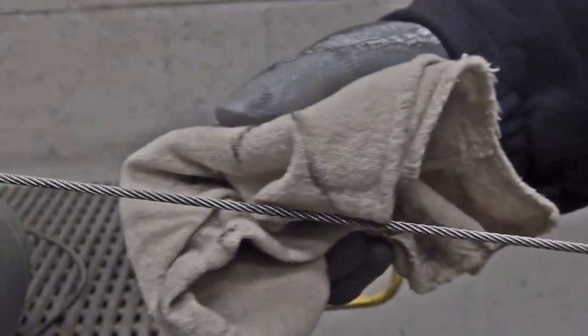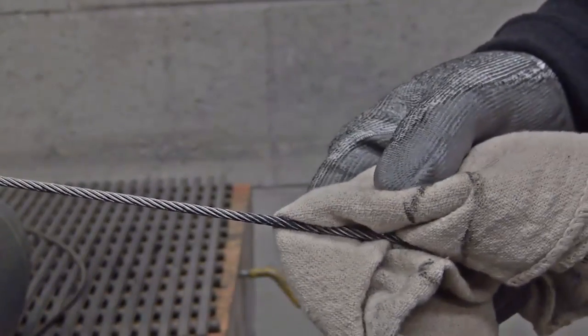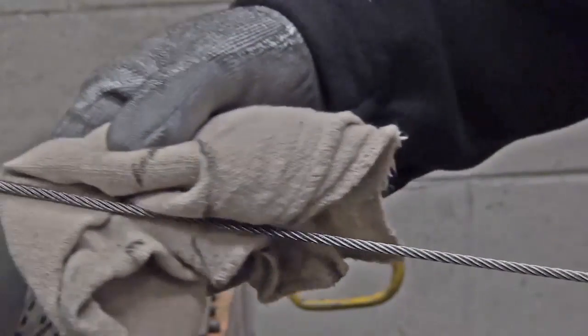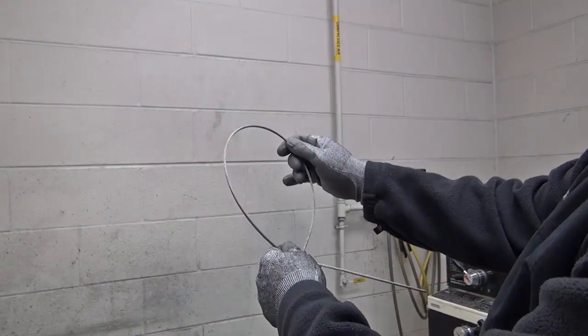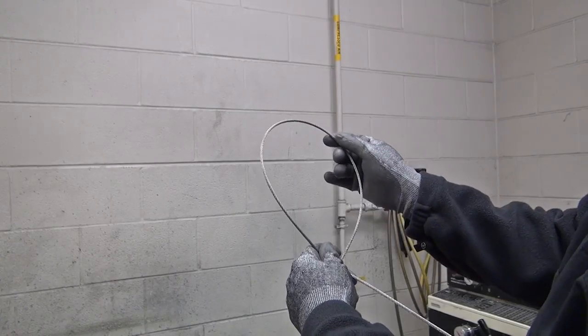Some broken wires cannot be detected by running a cloth over them, particularly in the critical areas, and it will be necessary to remove the cable and bend it in a loop to expose any broken wires.